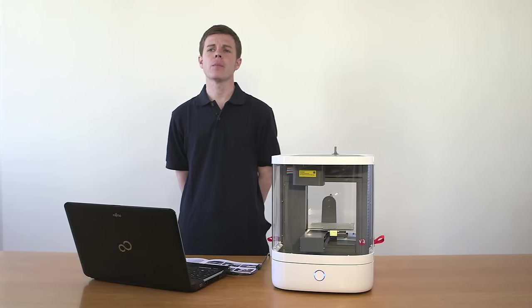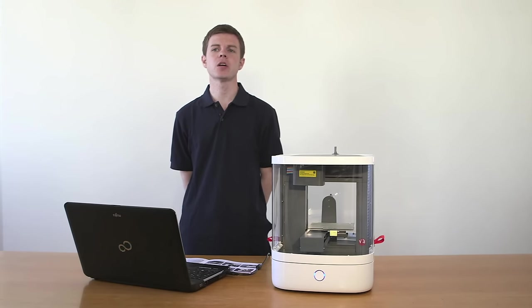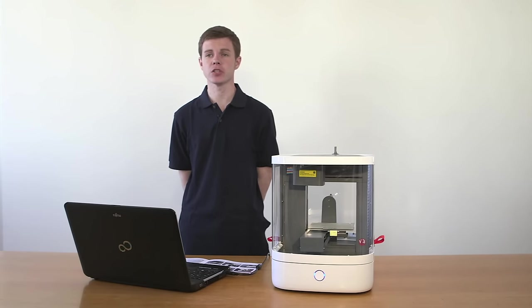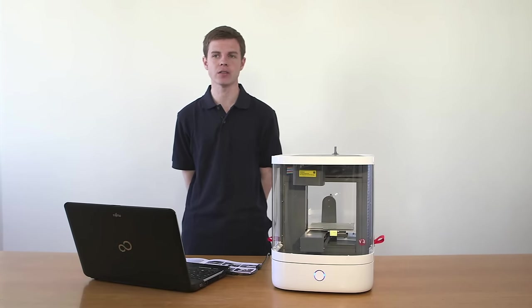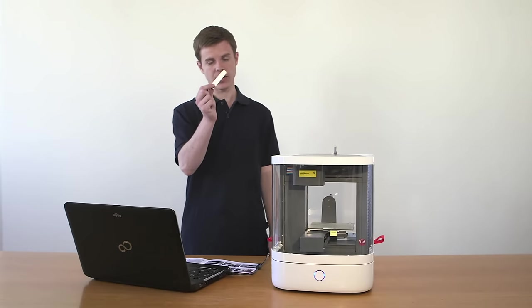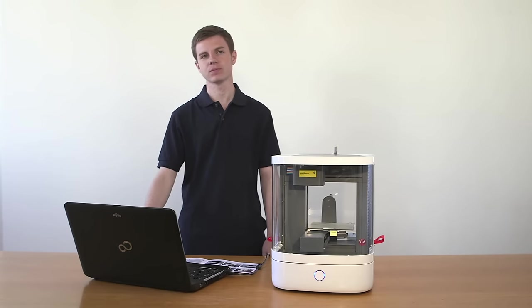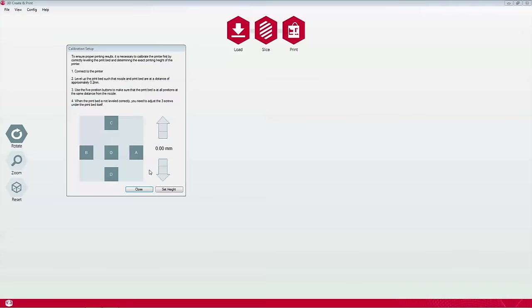The next step is to calibrate the build plate, which must be done before the printer is used for the first time. Calibration is essential. It ensures the build plate is always in exactly the right place in relation to the print head. You will need the calibration gauge. The calibration setup window appears when you first try to connect the software to the printer.